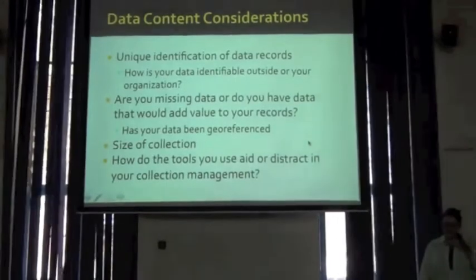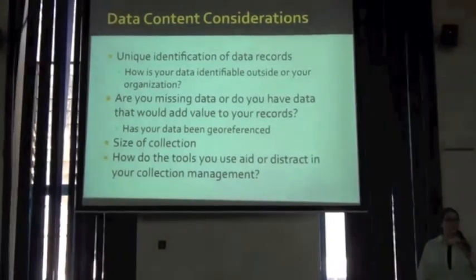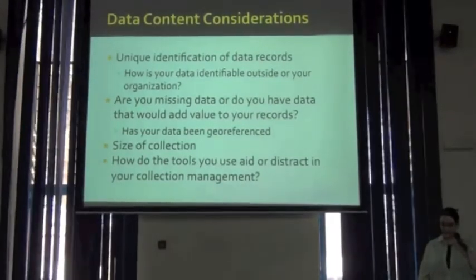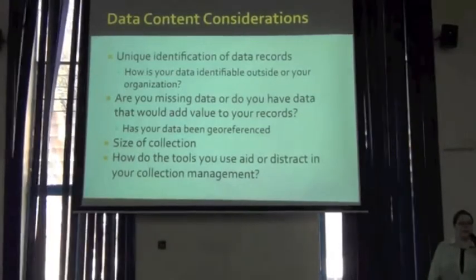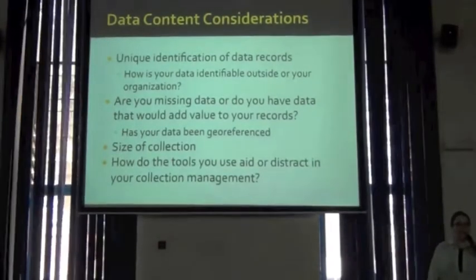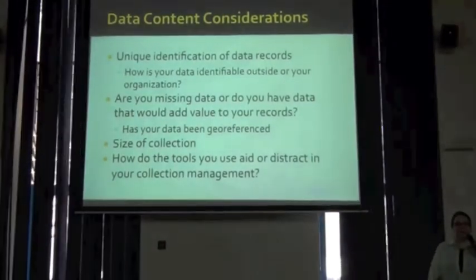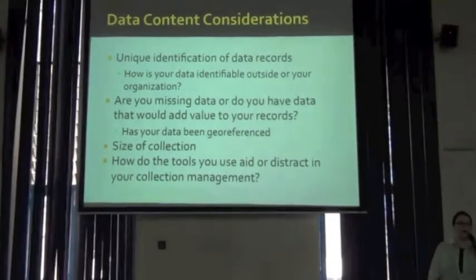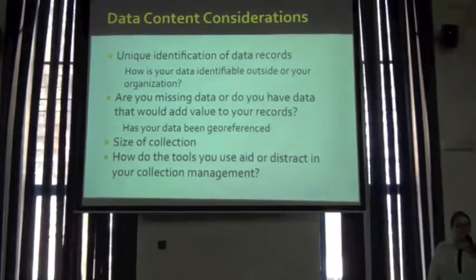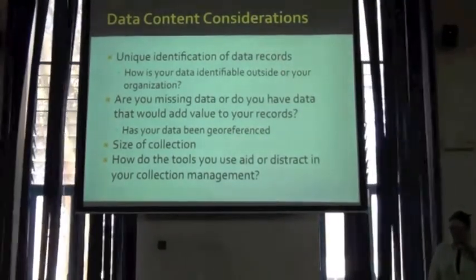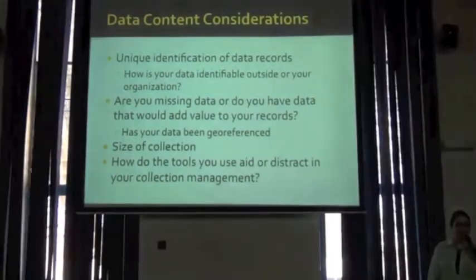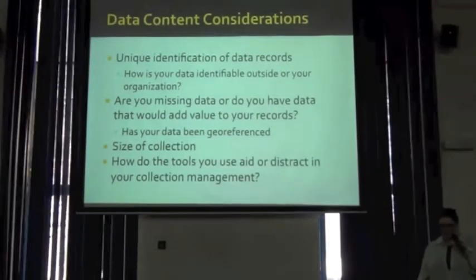Are you missing any data, or do you have data that would benefit and add value if you added it to your referencing information? It's important to know the size of your collection — how many records you have — because if you get to the point of publishing, you need to know your record count. If you end up having more records than you think, you may have bad characters causing new lines or blank lines. If you have less than anticipated, you may not be querying and pulling all the data you expected.